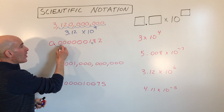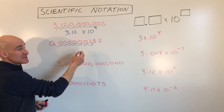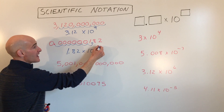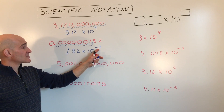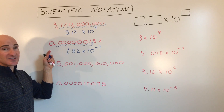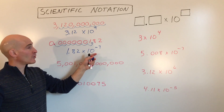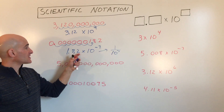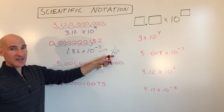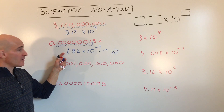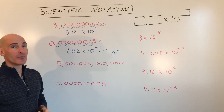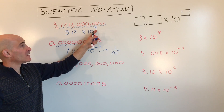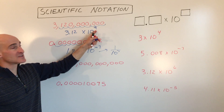We're going to move this decimal seven places, giving us 1.82 times 10 to the negative seventh. The negative seven means that when you see this number, you move the decimal seven places to the left. A negative exponent is really like 1 over 10 to the seventh power — it's like dividing 1.82 by 10, seven times. Every time you divide by 10, it moves that decimal one place to the left. A negative power of 10 indicates a really small number; a positive power of 10 indicates a really large number.